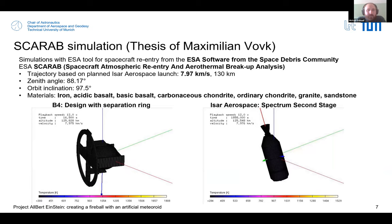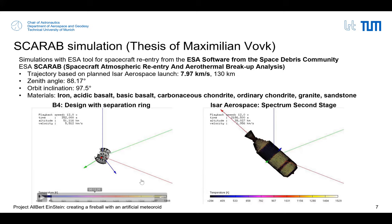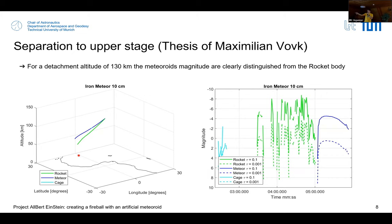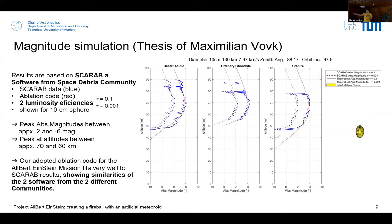Handing over to Max, who will discuss seven different materials that we can use in this sort of mission. The design is such that at an altitude of 130 kilometers, we managed to actually distinguish the meteor from the rocket body, both in time and in space. Here you can see the actual position and what we could be observing from a specific observation point.